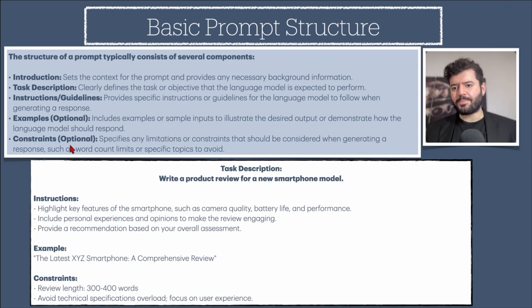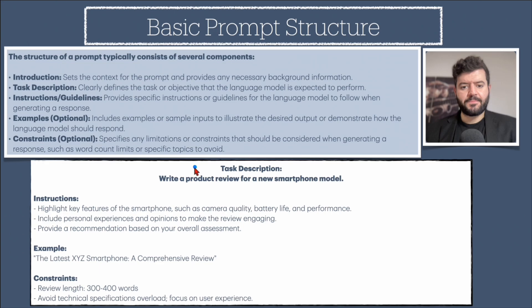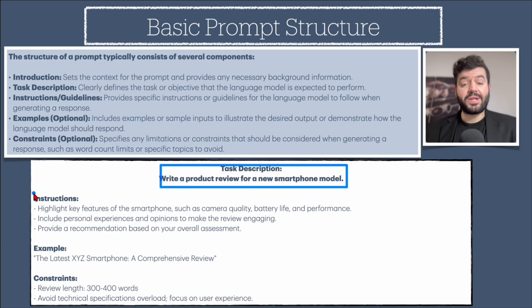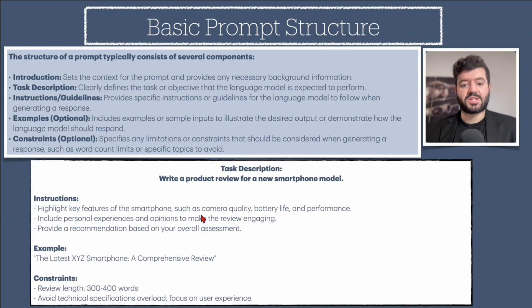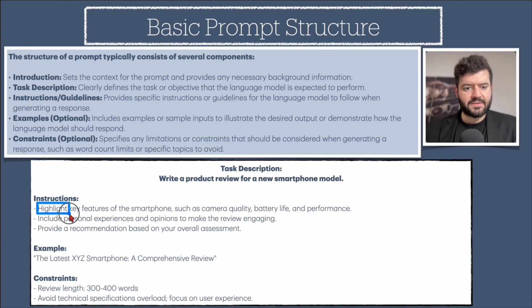Here's a concrete example. The task is: write a product review for a new smartphone model. The instructions to feed into ChatGPT are: highlight key features such as camera quality, battery life, and performance; include personal experiences and opinions to make the review engaging; provide a recommendation based on your overall assessment. Notice the action verbs — highlight, include, provide — these are what drive ChatGPT to act on your prompt.